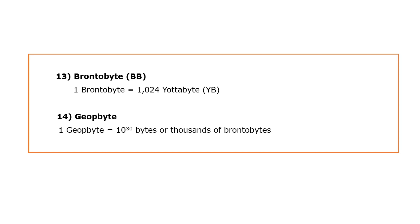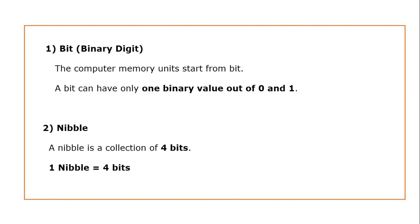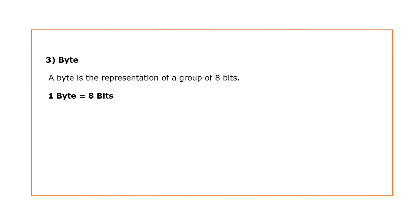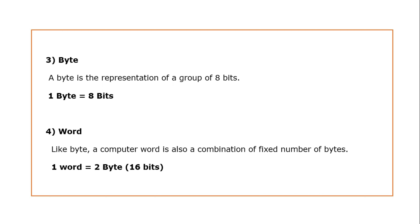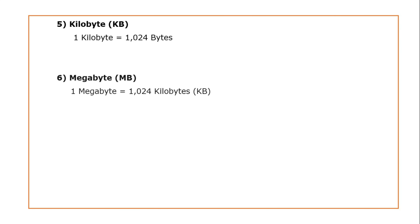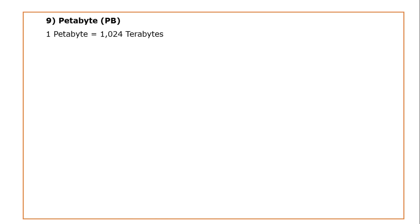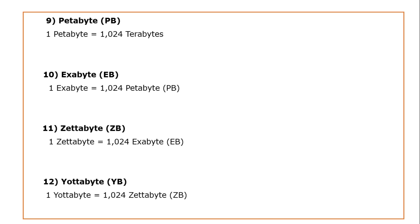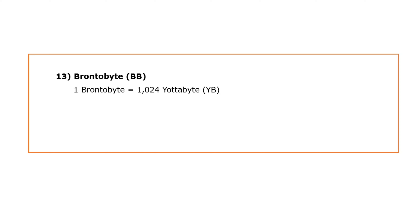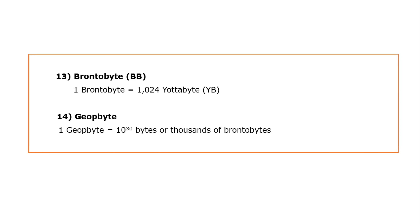I hope you can clearly understand this — you just have to remember the sequence. The smallest unit of memory is bit. After bit there comes nibble: 1 nibble equals 4 bits. Then byte: 1 byte equals 8 bits. Then word: 1 word equals 2 bytes or 16 bits. Then kilobyte, megabyte, gigabyte, terabyte, petabyte, exabyte, zettabyte, yottabyte, brontobyte, and finally geopbyte.